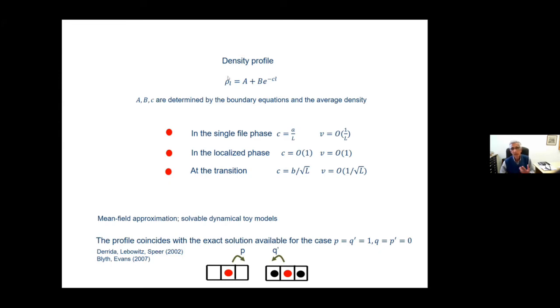The density profile, the way you can calculate it, in fact, the density profile is just very simply calculated, it's a plus b over e to the minus ℓ, it's exponential. And the transition manifests itself through the way c, basically this parameter, goes with L. It turns out that in the single file phase, the solution gives you it's one over L, and that's how it's a very broad profile. And then in the localized phase, it's a number of order one, and the transition turns out to be of order one over square root of L.